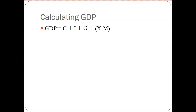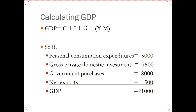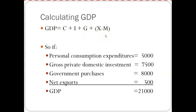Calculating the GDP: C plus I plus G plus exports minus imports. So if personal consumption is $5,000, gross private domestic investment is $7,500, and so on, you get a GDP of $21,000. It's a simple yet very large equation — you can see most of the semester in here. How do businesses and households react to each other? Then we look at how the government functions, how the banking and financial sector impacts households and businesses, and eventually the international section to round things off.